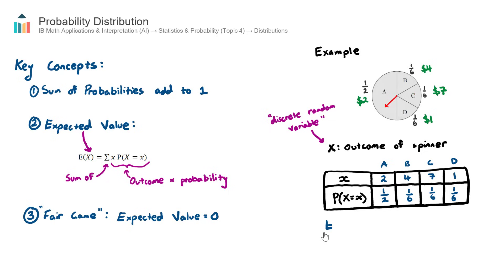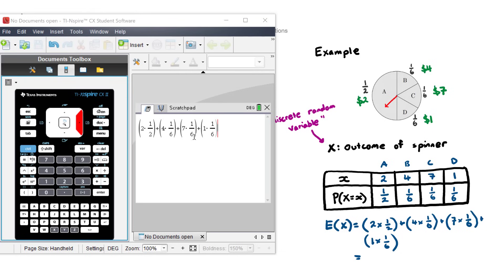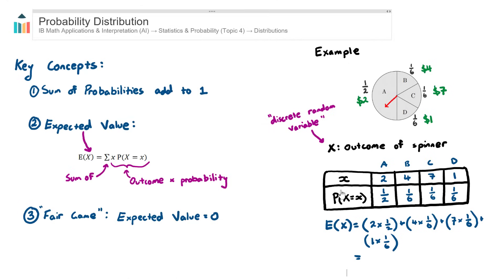The expected value of our discrete random variable X will equal the sum of the outcome multiplied by the probability. The sum of, we're going to progressively add them up. Four times one on six, that's for B, plus seven times one on six, plus one times one on six, and we can use our calculator to find the expected value of this spinning game. I've just entered that into my calculator. I hit enter, and I get an expected value of three.